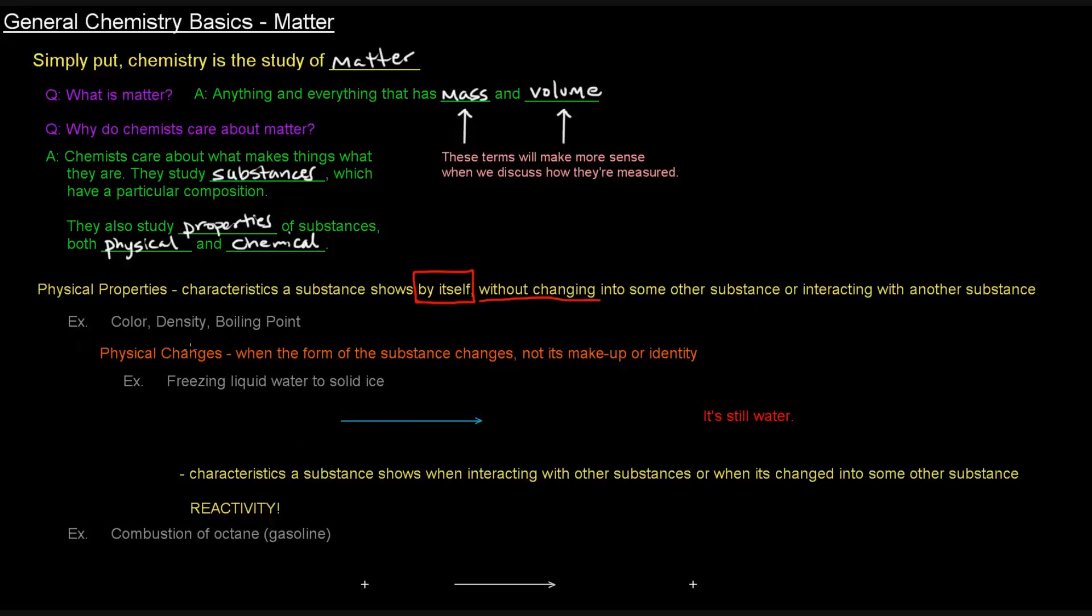With an example of a physical change, specifically. So physical changes are changes that occur when the form of the substance changes, not its makeup or identity. So this is an important part. The form changes, not the identity.